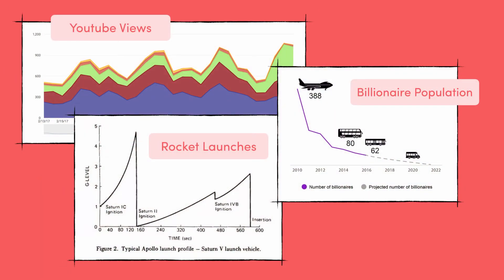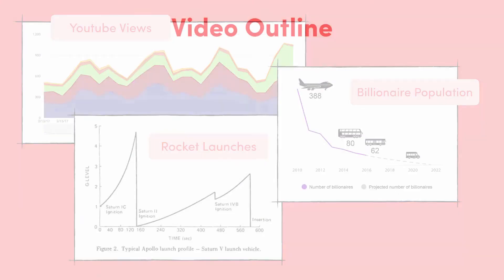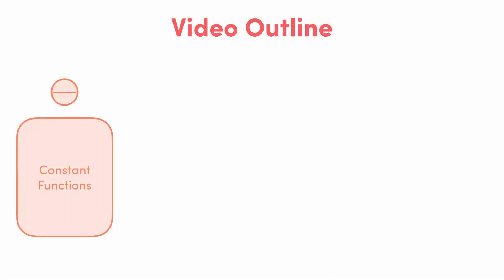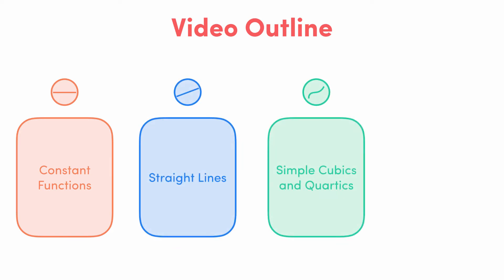Today we'll be learning how to sketch a few of them. To start with, we'll recap the graphs of constant functions. Then we'll move on to straight lines. After that we'll be looking at how to sketch a simple cubic or quartic function. Today we'll just be looking at their general shape, so don't panic. The last graph we'll look at is y equals root x, and then we'll wrap up with a summary.